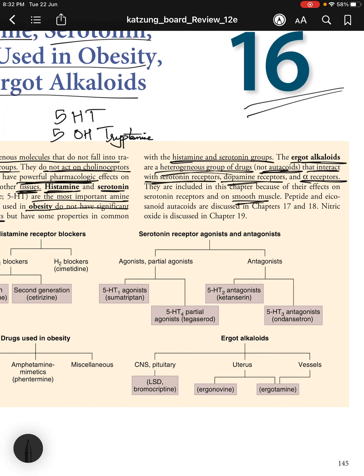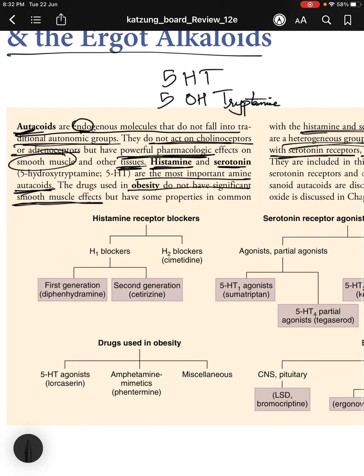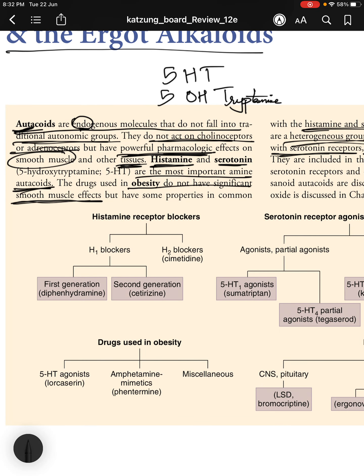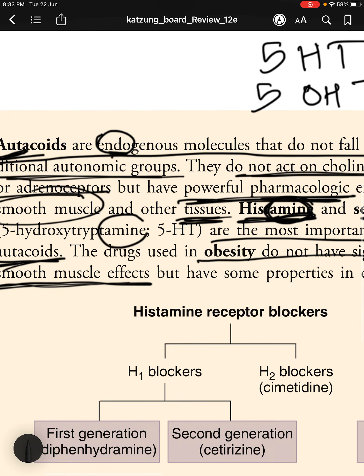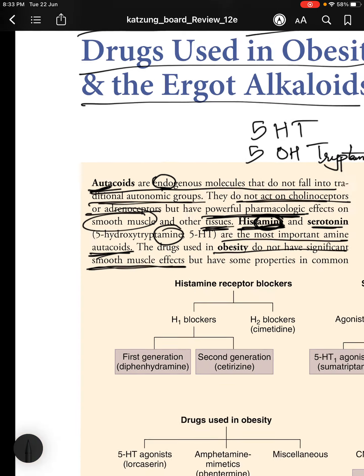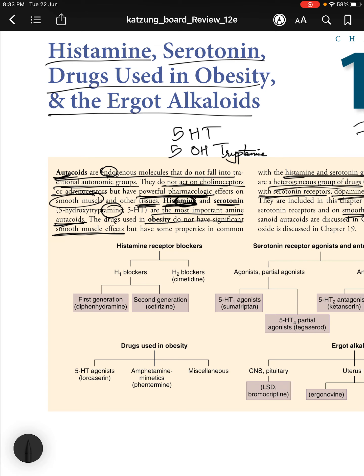Peptide and eicosanoid autocoids will be discussed in later chapters, and nitric oxide in chapter 19. Autocoids are endogenous molecules with powerful pharmacological effects on smooth muscles and tissues that do not interact with cholinoceptors or adrenoceptors. Amine autocoids include histamine and serotonin (5-hydroxytryptamine).